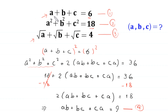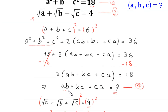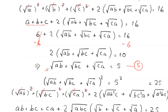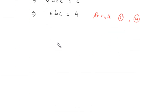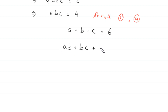Now we recall equation 1: a plus b plus c equals 6, and equation 4: ab plus bc plus ca equals 9. We also have abc equals 4. We suppose that a, b, and c are the roots of a cubic equation.